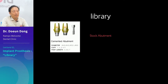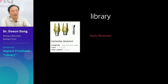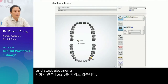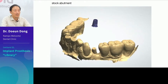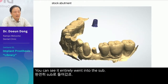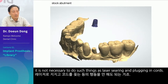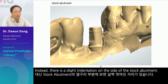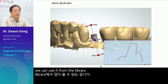One of the advantages of DIO is that stock abutments are in the form of a library — such a library is not available in other companies. We have libraries for both cemented abutments and stock abutments. You can choose a stock abutment. Here is a picture of an intraoral scan — you can see it entirely went into the sub. Even though a margin is formed to take a stock abutment impression, it is not necessary to do laser searing or plugging in cords. There is a slight indentation on the side of the stock abutment — because this part is recognized, if that is scanned, we can use it from the library.